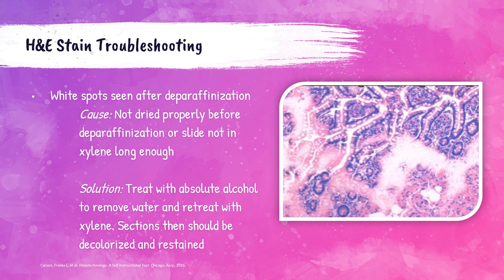Many errors can happen with H&E stains. When white spots or incomplete staining are present in a section after deparaffinization, this is caused by the section not being dried properly prior to deparaffinization, or the slide not remaining in xylene long enough. Areas that still contain paraffin cannot be penetrated by the stain, resulting in white areas. To correct this, treat with absolute alcohol to remove water, then treat again with xylene to remove all paraffin, then decolorize and restain.